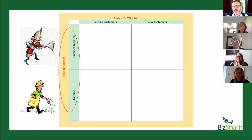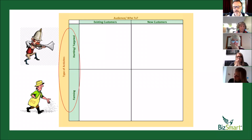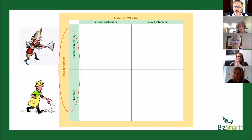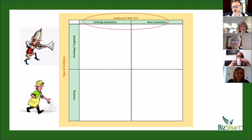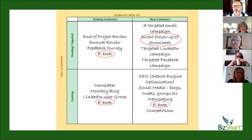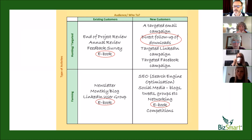Back in November we looked at this matrix to identify a small number of tactics that will really drive the business forward. On the left-hand side we looked at type of activity — whether it's hunting, meaning direct targeted activities to individual companies or people, or farming activities, which are more general about creating awareness and positioning. Across the top, the audience: existing customers or new customers. We can use this to brainstorm ideas and identify one or two things in each area that, if done really well, would make a big impact.